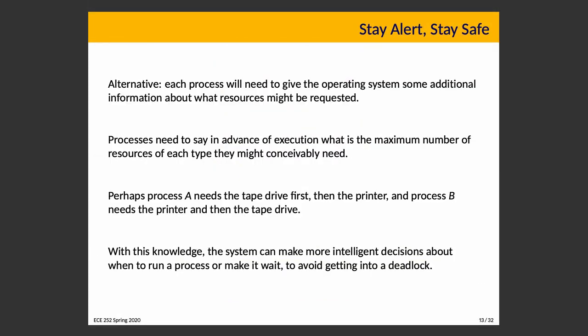Our strategy is that the process wanting to run has to give the operating system information about what resources it might want. Processes need to declare in advance the maximum number of resources of each type they might conceivably need. In a tape drive system — say, with a tape drive and a printer — process A needs the tape drive first to read data then the printer to print, and process B uses them in the opposite order. Knowing this, the operating system can make more intelligent decisions about when to run processes or make them wait so that deadlock does not occur.